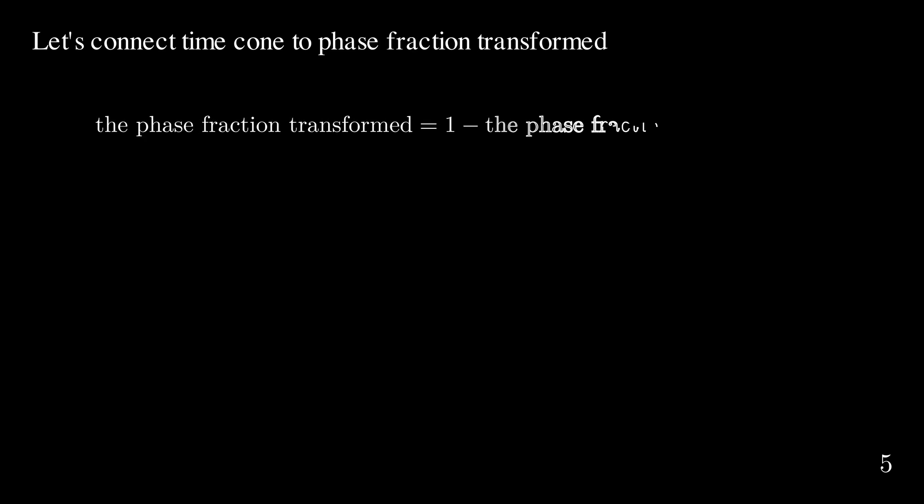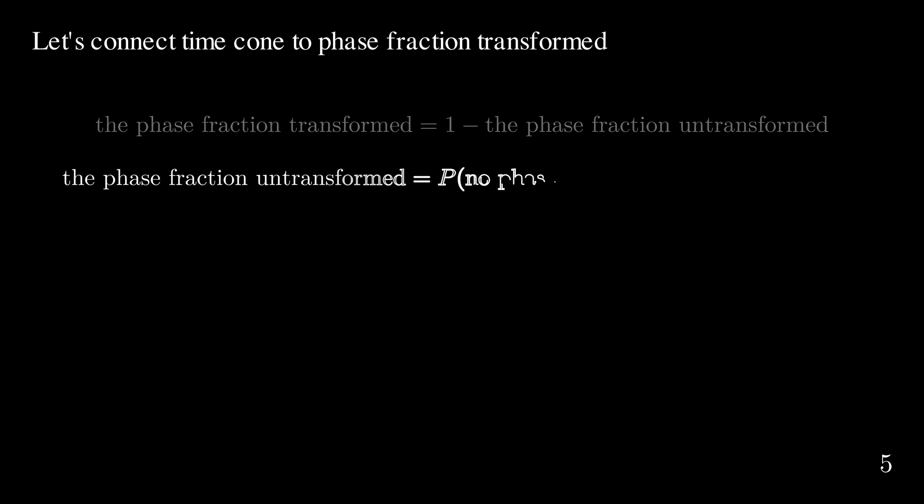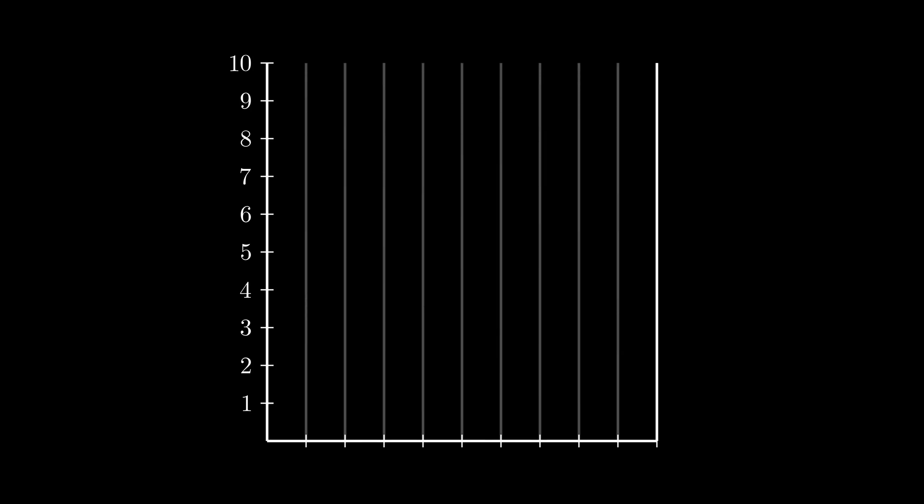Now let's connect the time cone to the phase fraction transformed. At any given time, the phase fraction transformed equals one minus the phase fraction untransformed, and the phase fraction untransformed equals the probability that no phase transformation has occurred. You may wonder how we can equate a probability to an overall phase fraction. Suppose we have a 2D space sampled with a 10-by-10 grid, and each square represents a single point in space. For every square point in this grid, let's say the probability that it will remain untransformed is 0.2, so the probability that each point becomes transformed is 0.8.